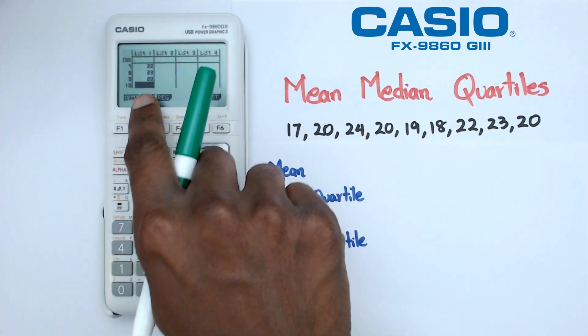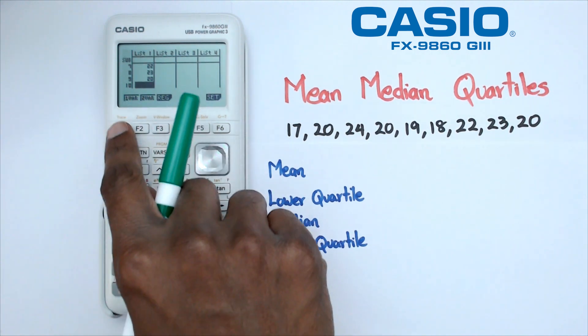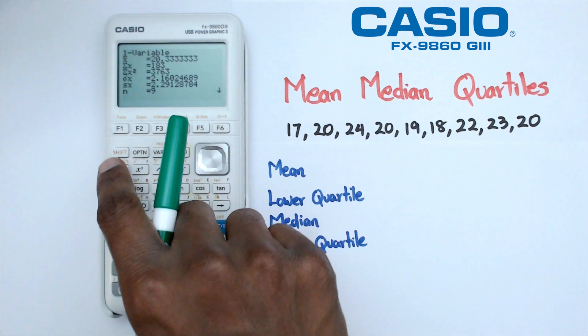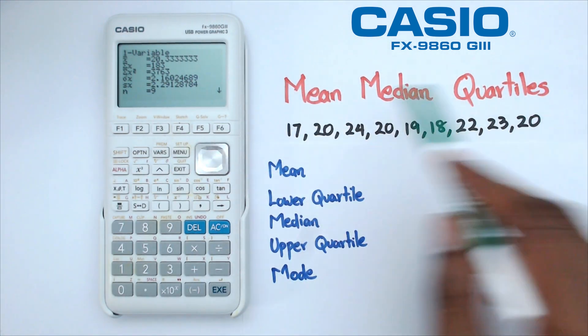Right now we're only looking at one variable, so we're going to click on F1, which stands for that one variable. And there we go, what we have right now is pretty much all the information that we need to know about this set of nine bits of data here.